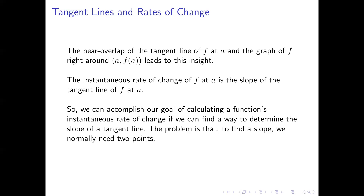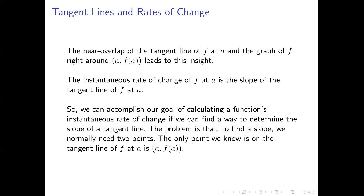We run into a problem though, because a tangent line touches our graph at only one point. To calculate the slope of a line you typically need two points — x₁, x₂, y₁, and y₂. Since we only know one point on the tangent line, we're going to need a way to find the slope when we only know the coordinates of one point. This leads us to using difference quotients and their limits.